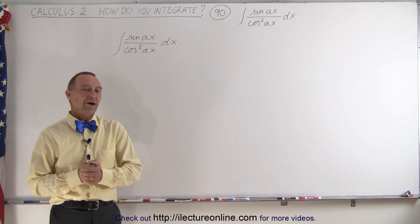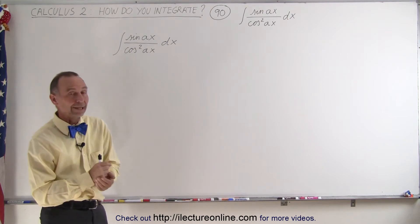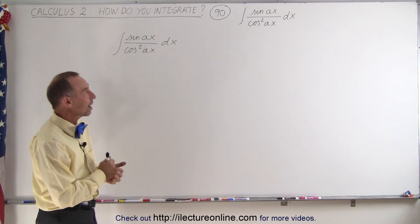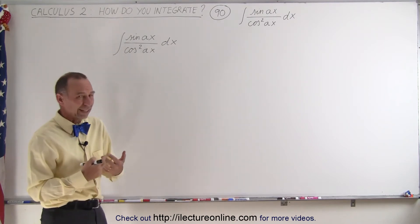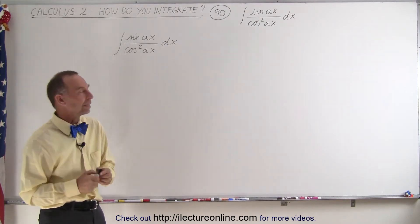Welcome to ElectronLine. Our next integral here we have a sine of Ax in the numerator and a cosine squared of Ax in the denominator. So at first it looks like it's very different from what we've done in the previous few videos but it's actually not all that different.